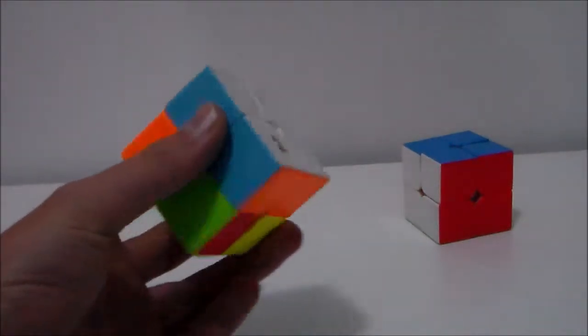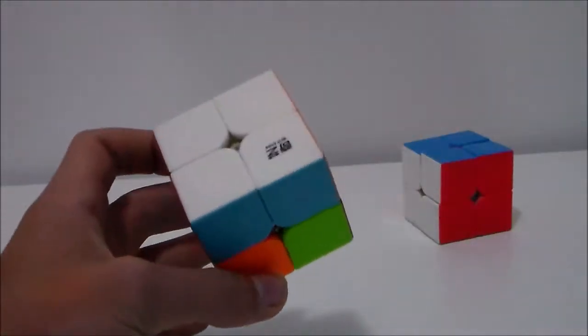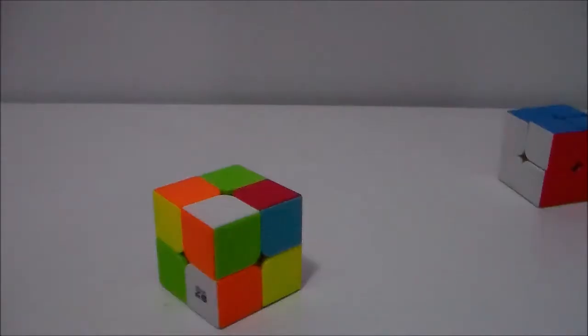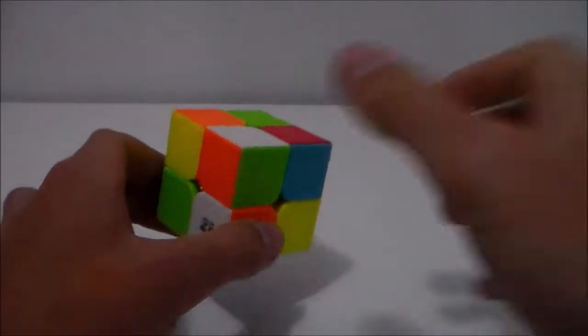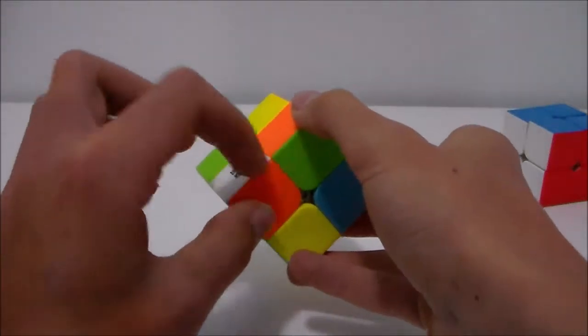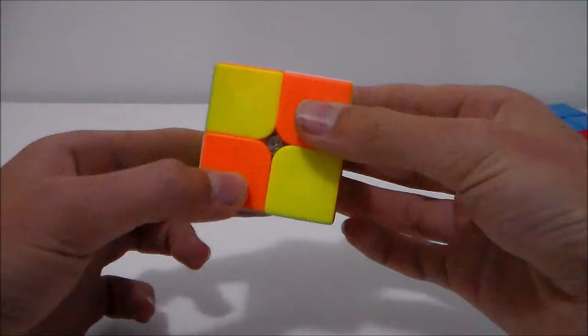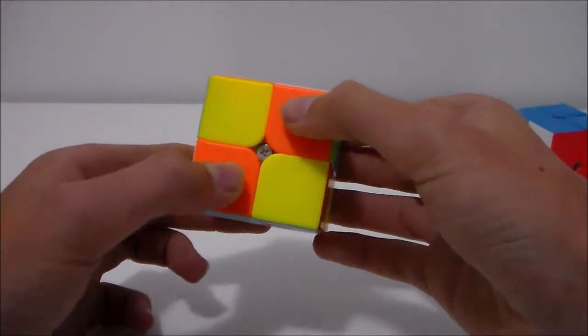The first step to solving the 2x2 will be making a first layer. This can be done with only using a few simple algorithms. The first thing we will want to do is make a pair with the two white pieces. So here I have white and orange, and then also I have white and orange. So what I will want to do is move it so that these two here are diagonally.